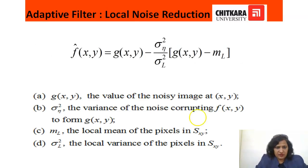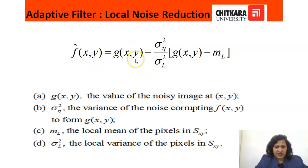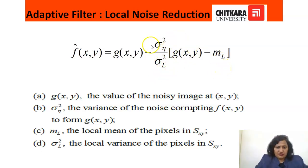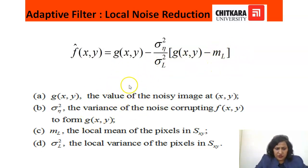Mathematically, the adaptive filter can be represented by this equation: the approximation of F(x,y) equals G(x,y) minus (sigma_n squared divided by sigma_l squared) into (G(x,y) minus m_l). Where G(x,y) is the noisy image, sigma_n squared is the global variance, sigma_l squared is the local variance, and m_l is the local mean of the image. We will calculate these by example.